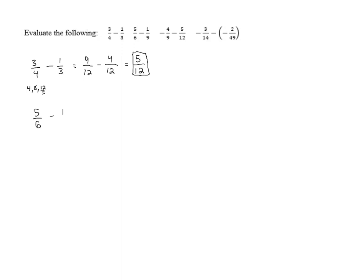It's really not that much more difficult. Let's look at the next one. 5/6 minus 1/9. We need a common denominator here. If we look at multiples of 6, we've got 6, 12, 18, and we recognize 18 as a multiple of 9. So that makes it our least common denominator.